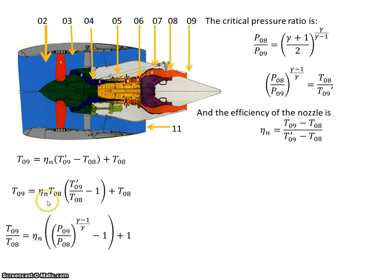And dividing this side by T8, I get an expression for T9 over T8 because I know T9 over T8 is equal to this.